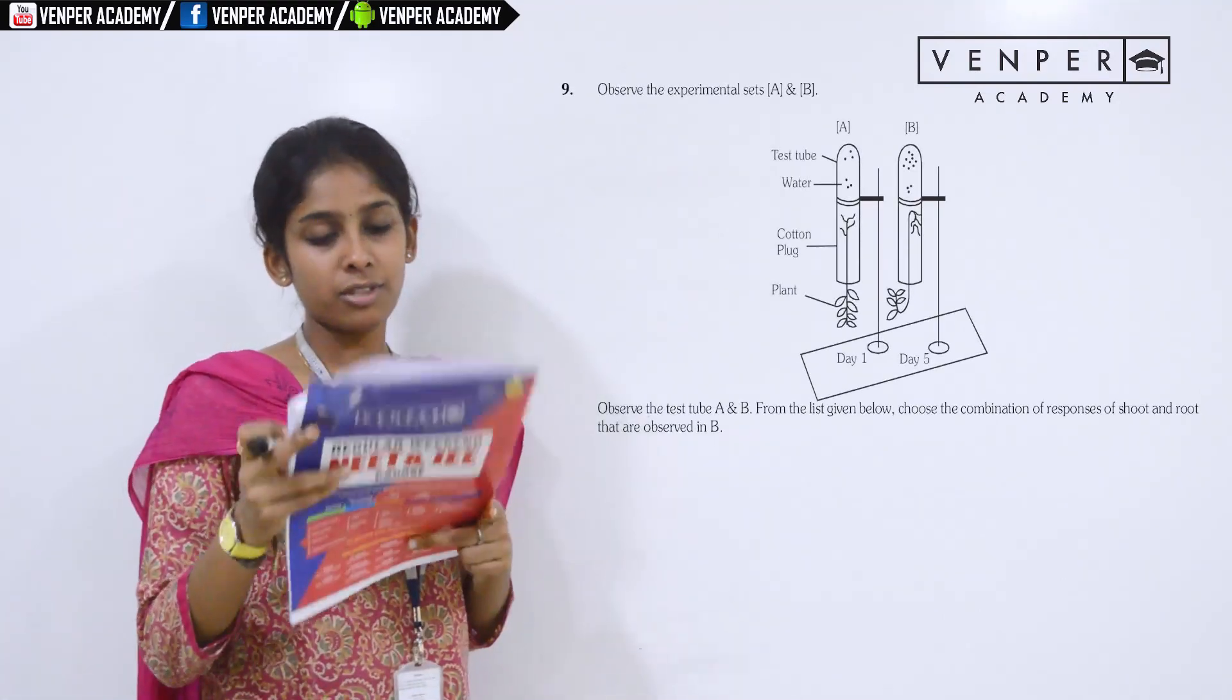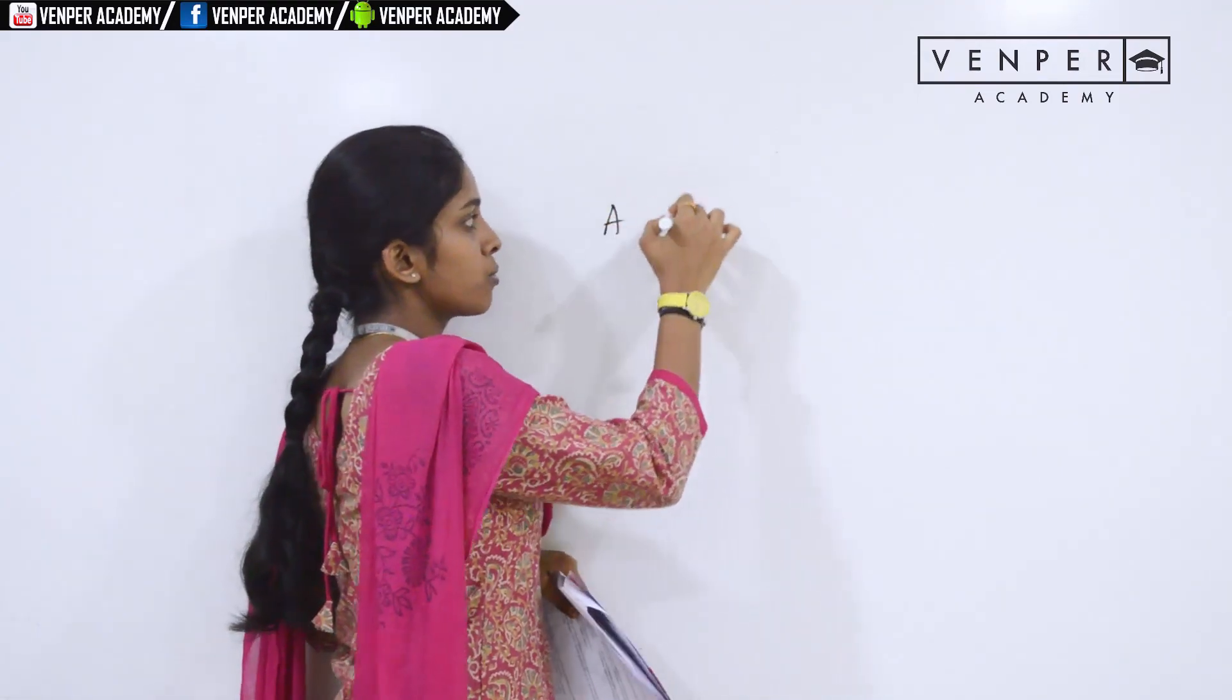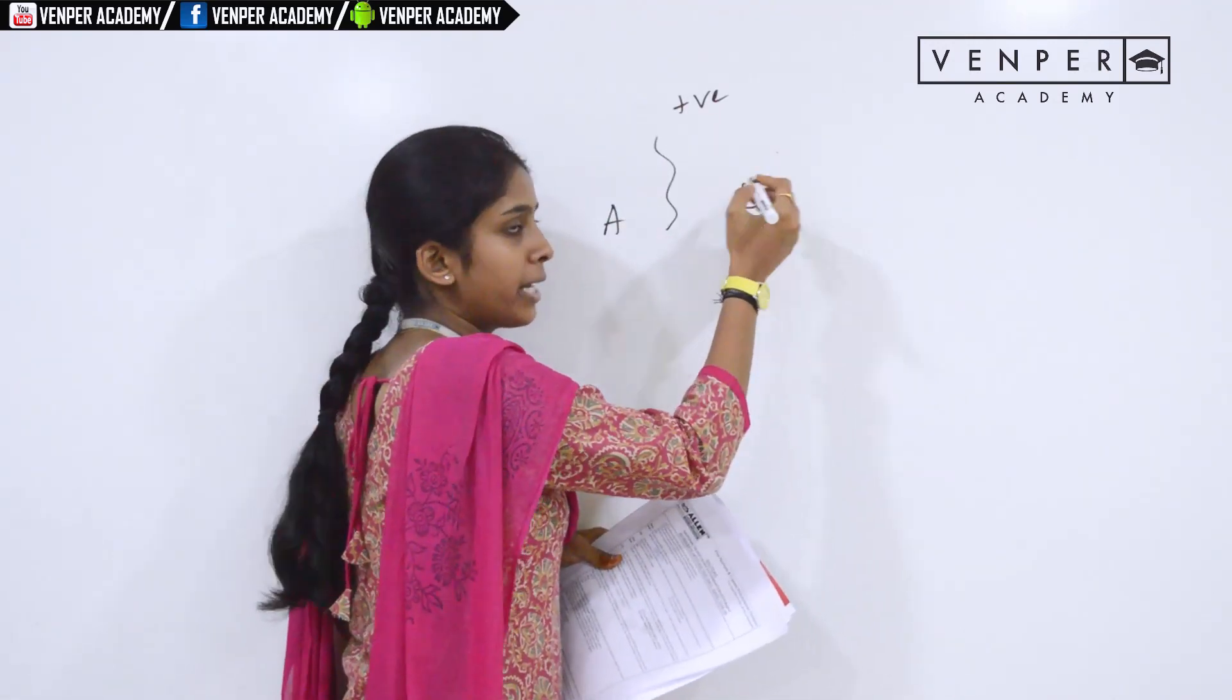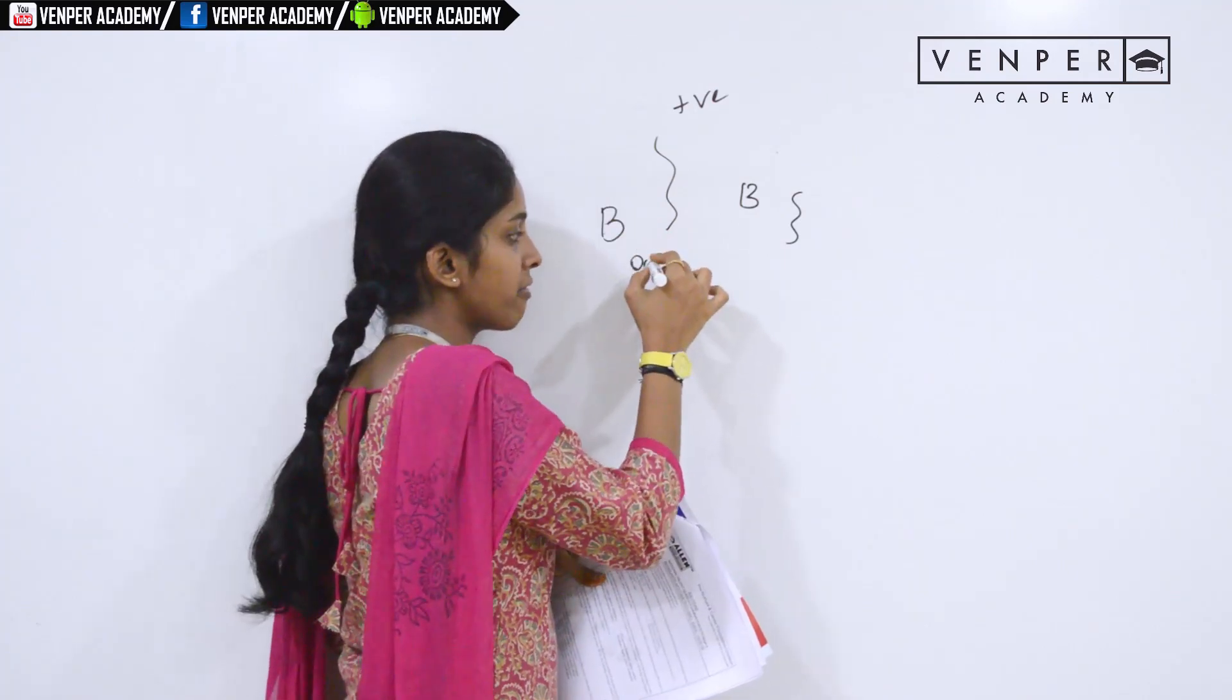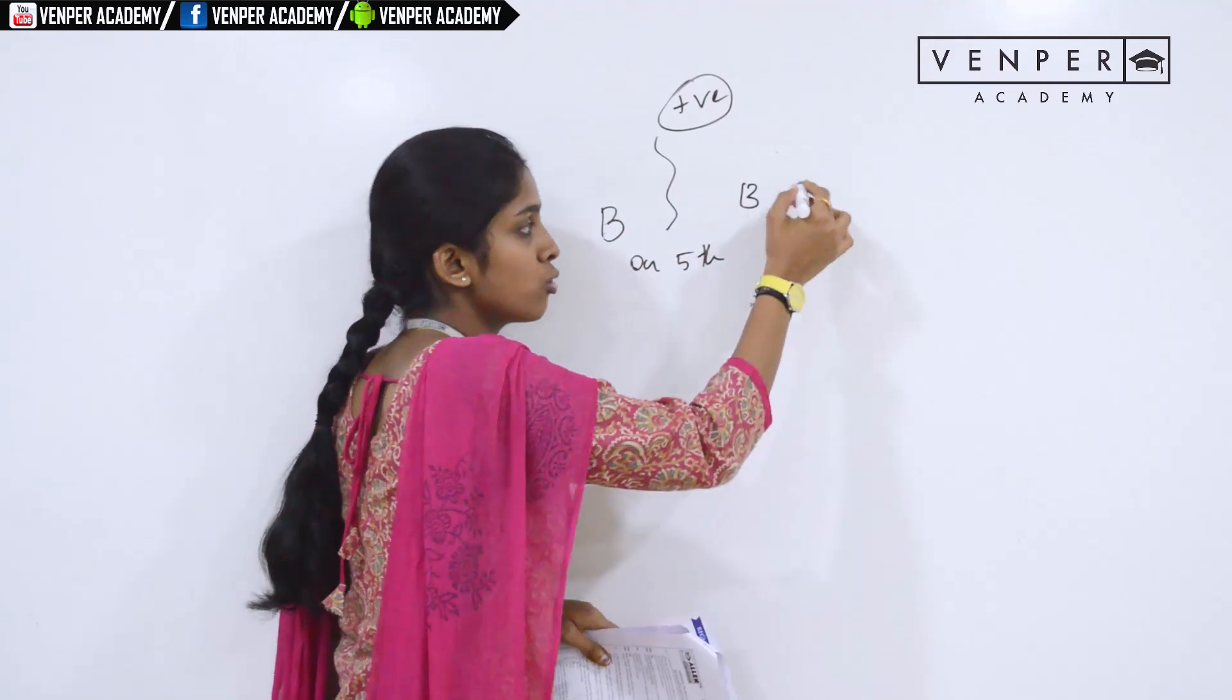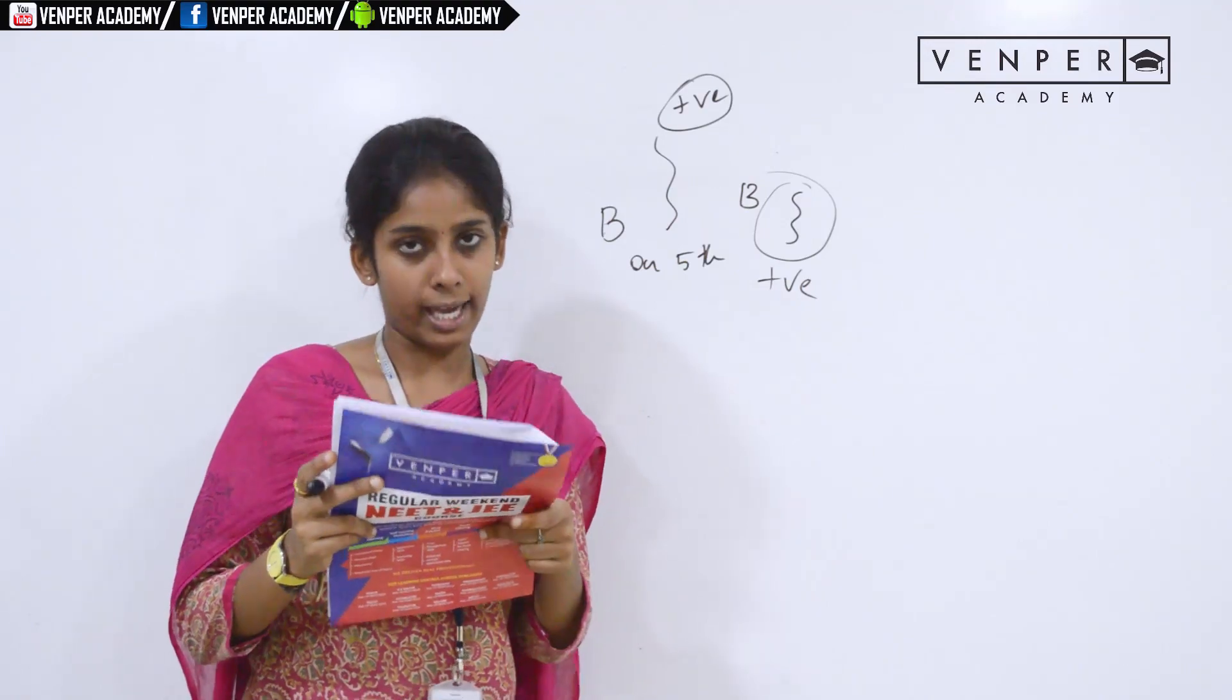Ninth question: observe the two experimental setups A and B. What is the conclusion you draw from the two experimental setups? If you see in plant A, the shoots move up. This is positive phototropism. They move towards the region where there is light. In setup B, on day 5, when it is mature, the shoots move towards the top, that is grow upward, that is positive phototropism. And roots grow towards the downward direction, this is positive geotropism. These are the observations you can conclude from the two experimental setups. Your option would be A, the first option.